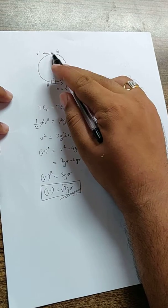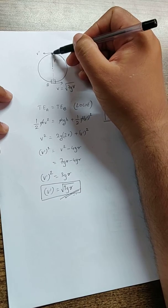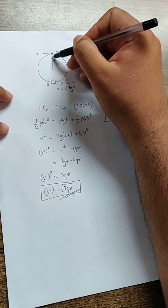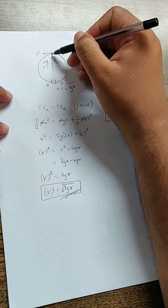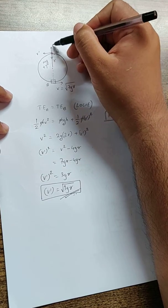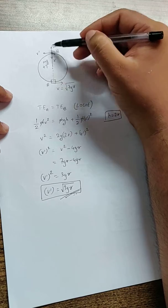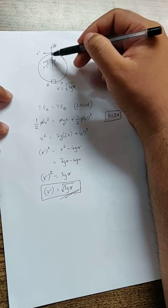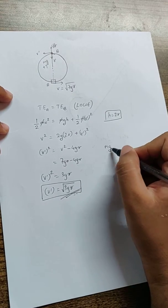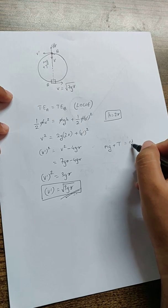Now we also want to find the tension at this point. I can say at this point the forces acting are Mg and tension in one direction, which is downward, and centripetal force in the opposite direction. So this body is experiencing these two forces because of which it will be getting balanced. So I can say Mg plus the tension is centripetal force.